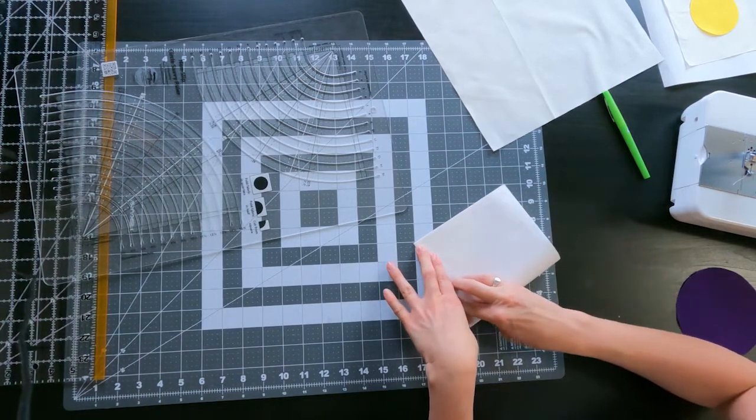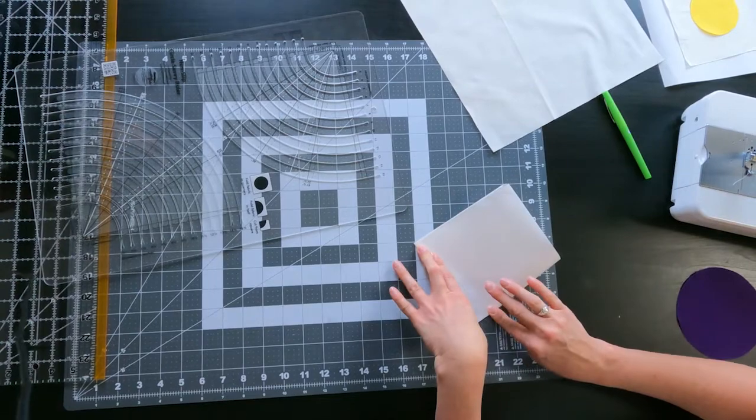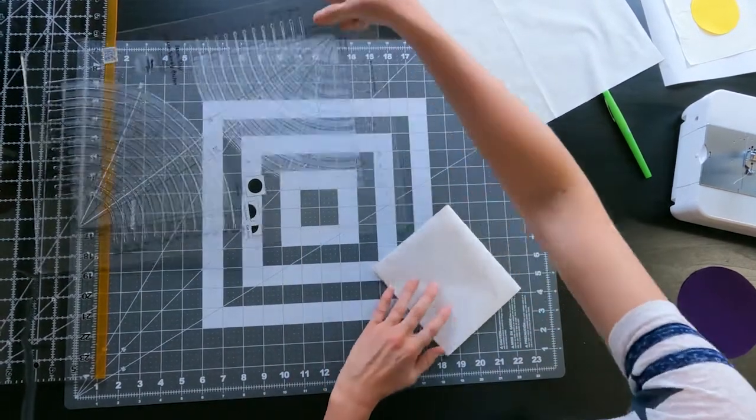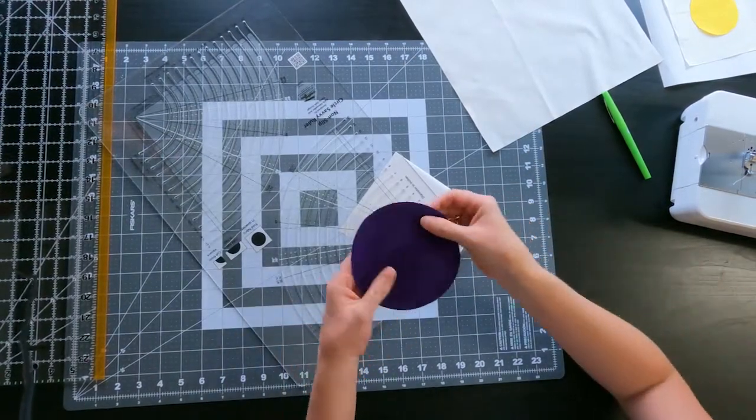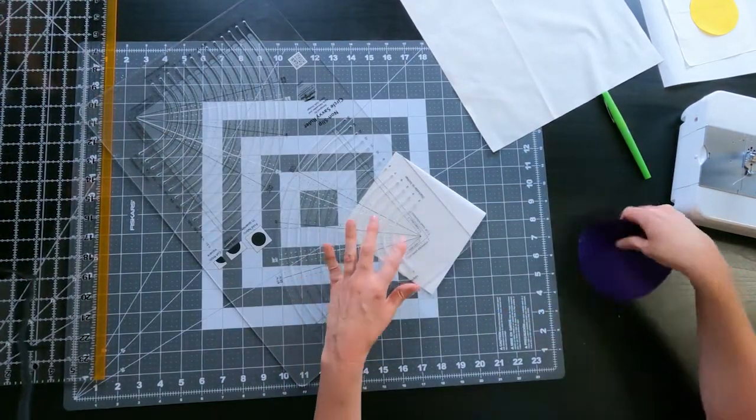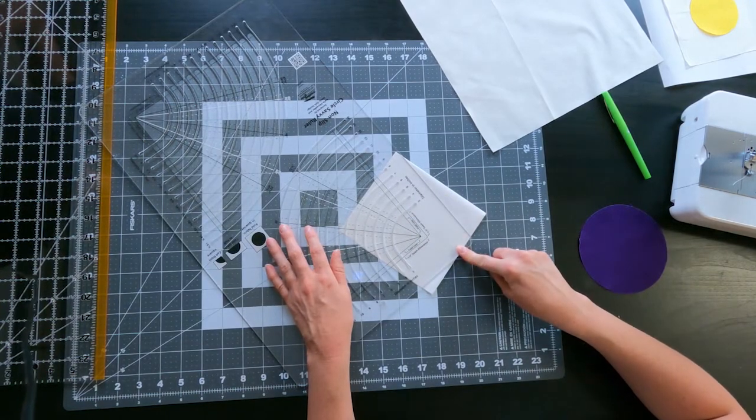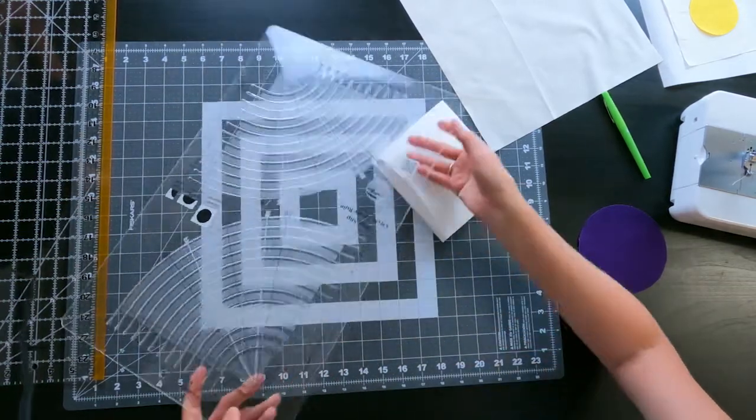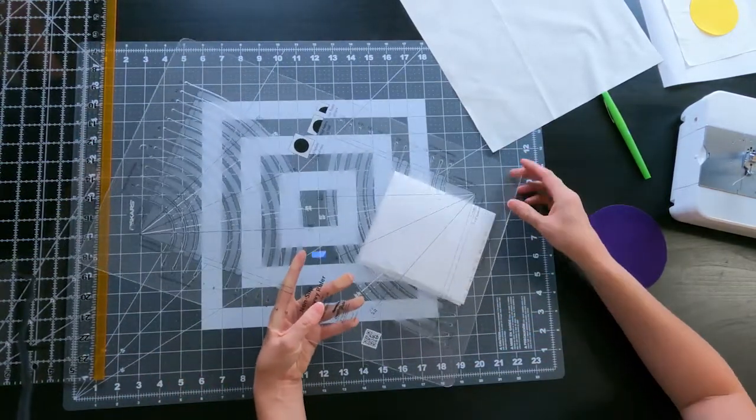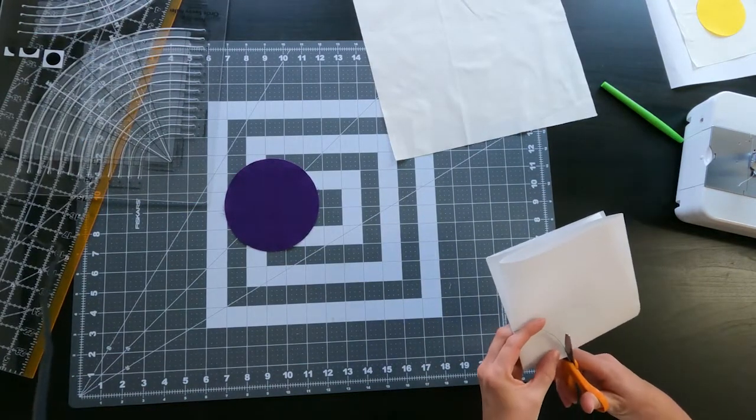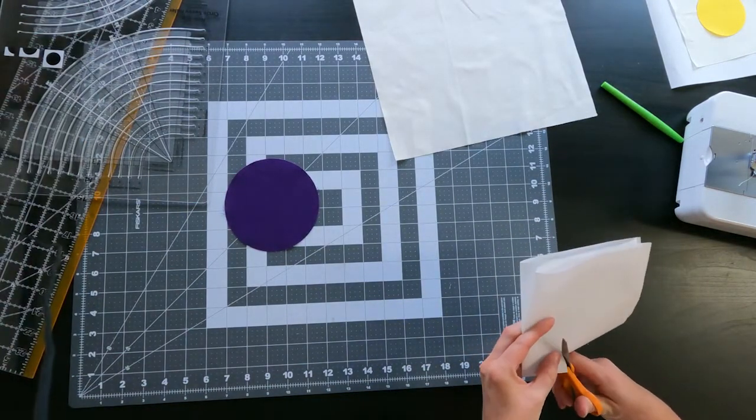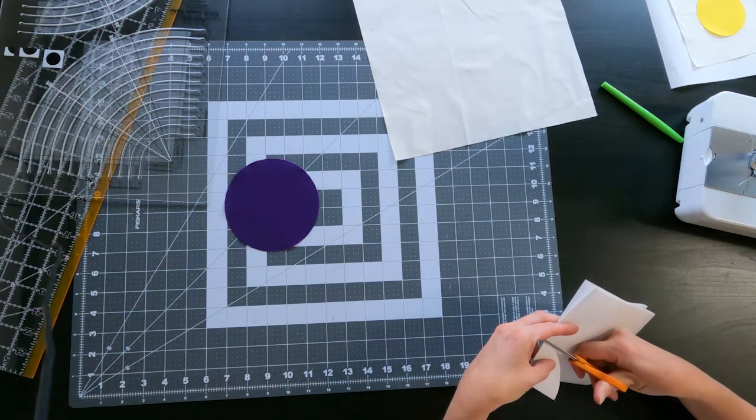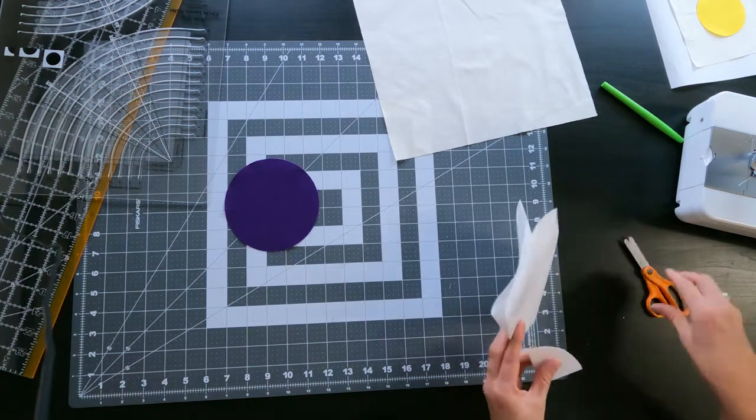Don't worry about being exact on the edges. We will be more exact when we actually put it on the fabric. We've got a circle that is about five inches in diameter. So we want to cut our template a little bit smaller than the circle. We're going to cut this one at four and a half inches.